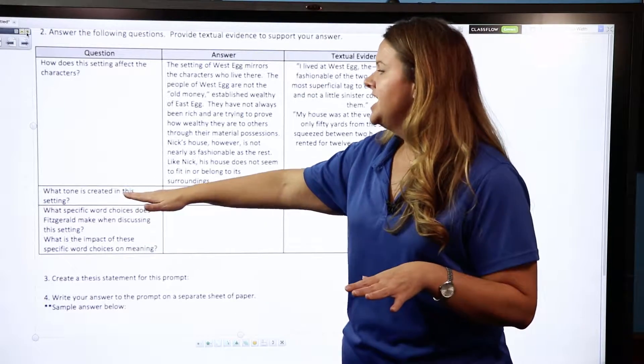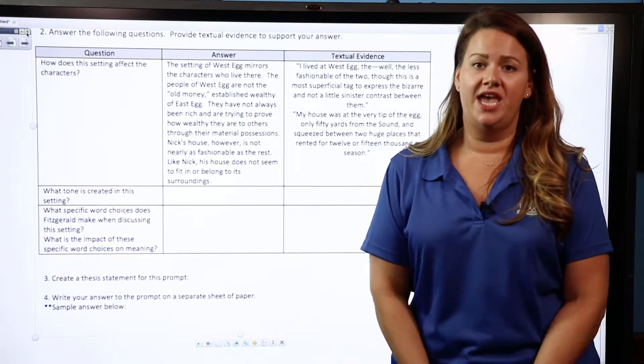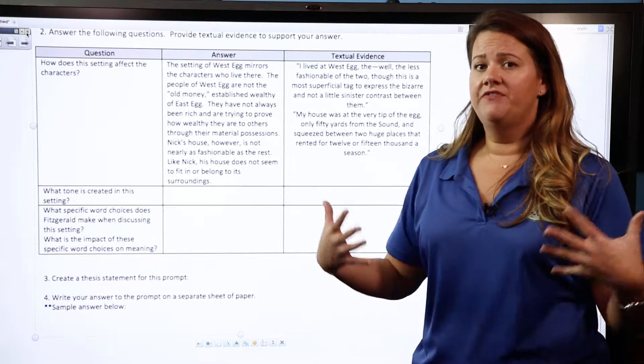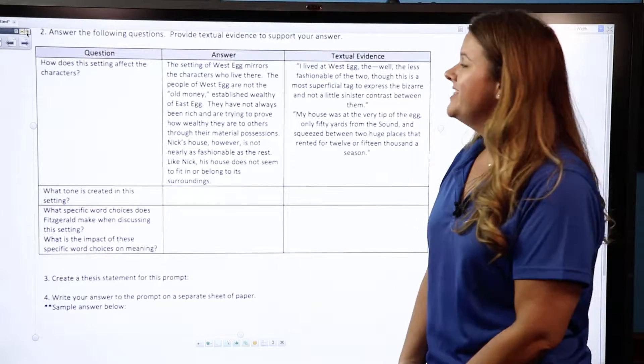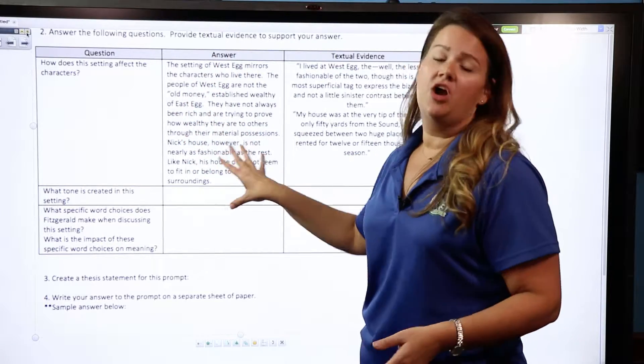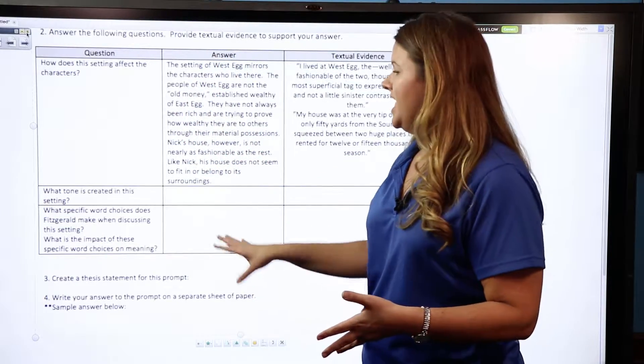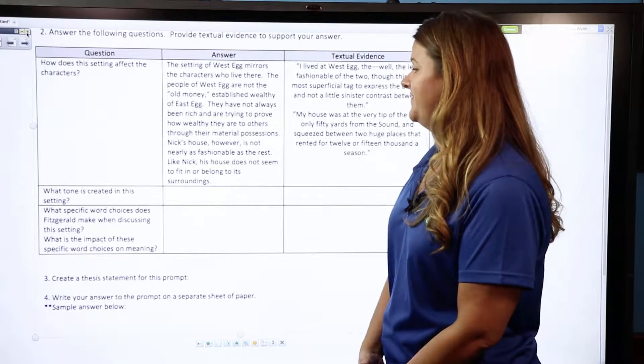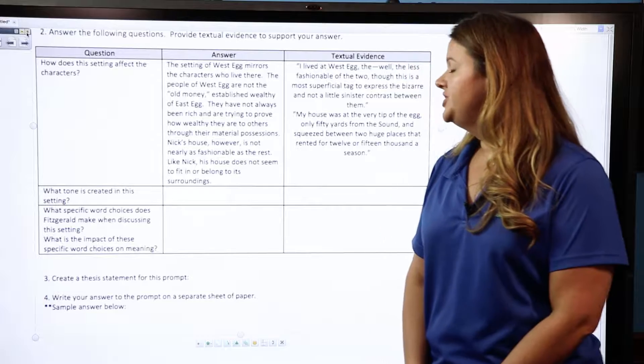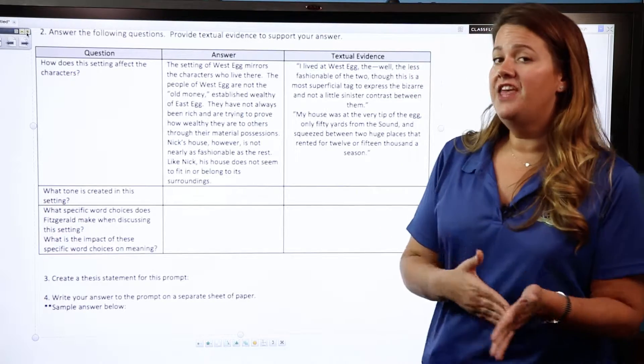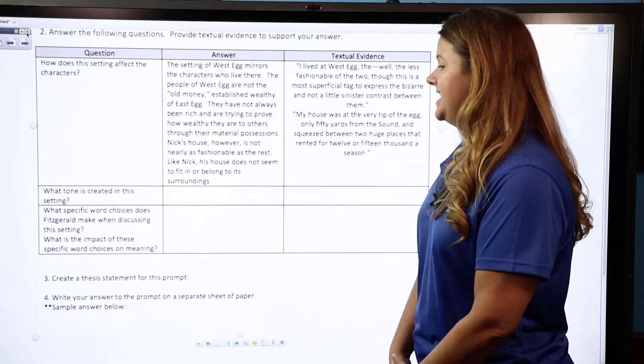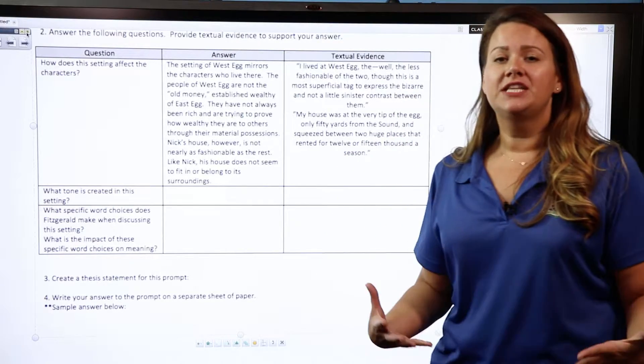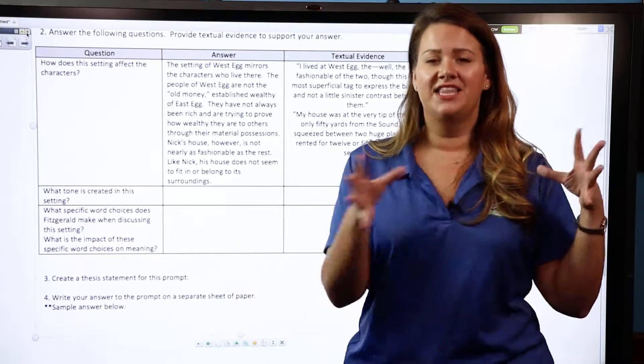Then I would go on and talk about what tone is created in this setting. So how does that speaker, how does that narrator feel? What is the tone from the author that is created in regards to the setting that you choose? And then finally, you're going to highlight what are some specific word choices Fitzgerald makes when discussing this setting, and then more importantly, what is the impact of these specific word choices on meaning?